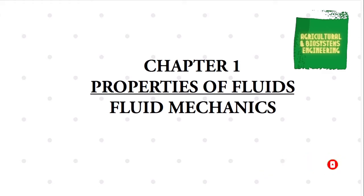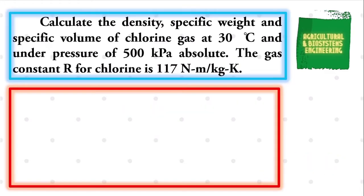We will be solving this problem: calculate the density, specific weight, and specific volume of chlorine gas at 30 degrees Celsius and under a pressure of 500 kilopascal absolute. The gas constant, symbolized by the letter R for chlorine, is 117 newton·meter per kilogram·kelvin.